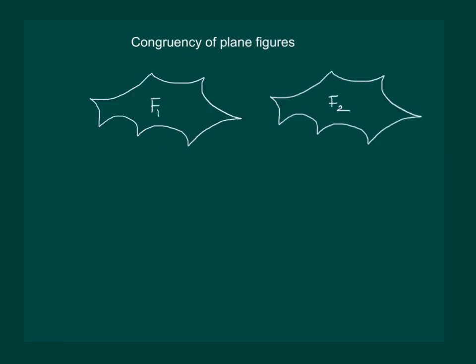Look at the two figures. Are they congruent? We can use the method of superposition by taking a trace of one of them and placing it over the other. If the figures cover each other completely, they are congruent.